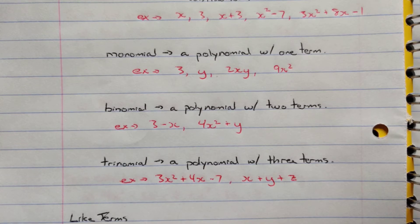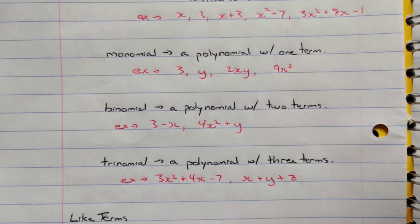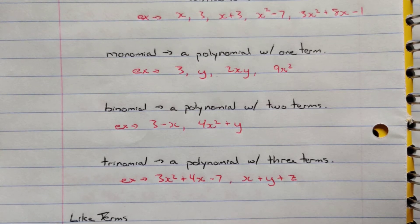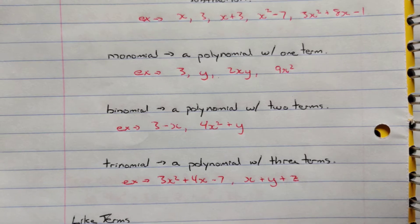We don't use the term 'quadnomial' because it gets confused with 'quadratic.' We typically only name one, two, and three terms because we often work in one, two, and three dimensions. So: monomial, binomial, and trinomial — mono means one, bi means two, tri means three — are all types of polynomials.